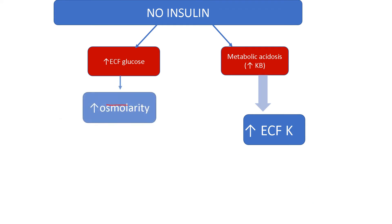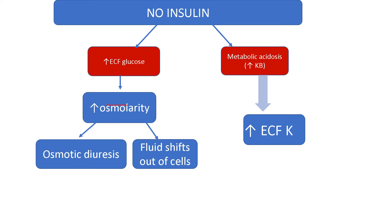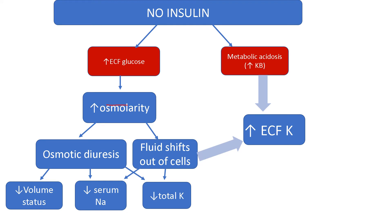The consequence of increased ECF glucose is increased osmolality. Because we have a lot of osmotic pressure outside the cell, it's going to drive fluid to shift outside into the intravascular compartment. It also draws fluid from the interstitium of the kidney into the kidney tubules, leading to diuresis and the polyuria these patients experience. As a result of this diuresis, you lose a lot of your electrolytes and volume.